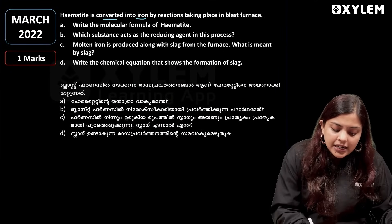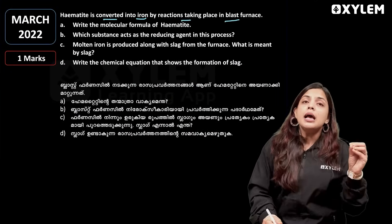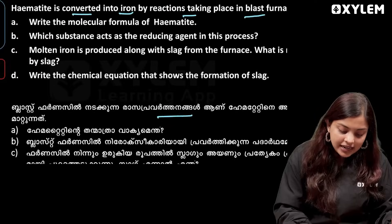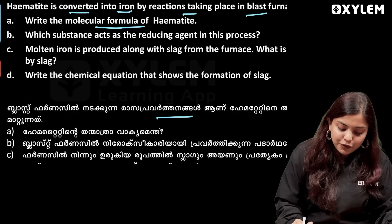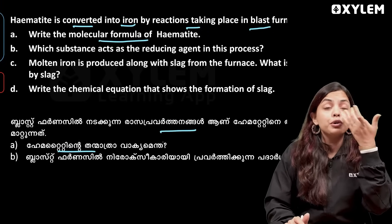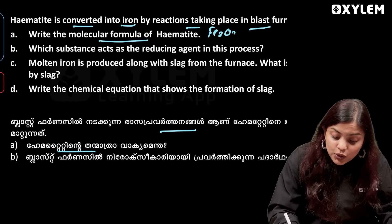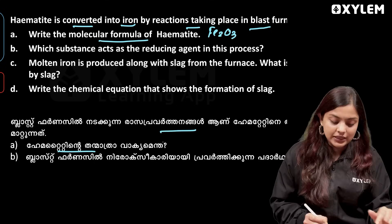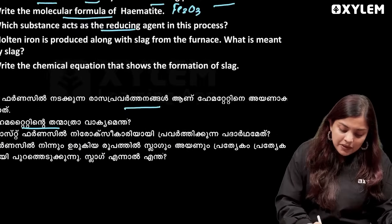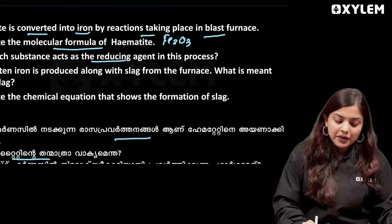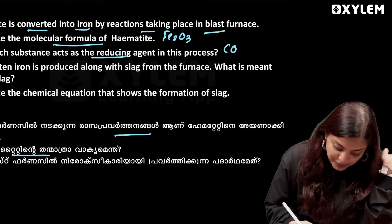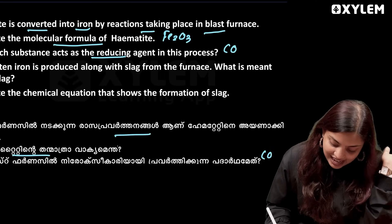Hematite is converted into iron by reactions taking place in the blast furnace. The molecular formula of hematite is Fe2O3. The substance that acts as a reducing agent in this reaction is carbon monoxide (CO).